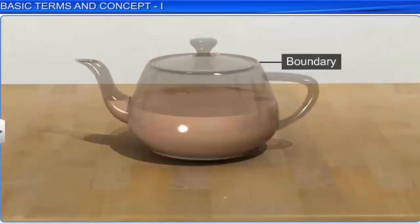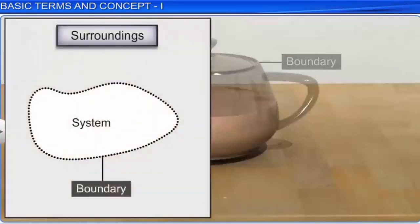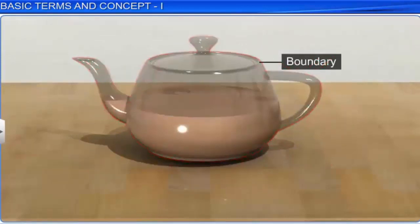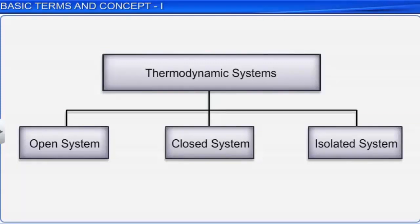Note that a boundary can be real or imaginary, and it controls the flow of energy and matter into or out of the system. In thermodynamics, based on the movements of matter and energy between a system and its surroundings, systems can be classified into three types: open system, closed system, and isolated system.